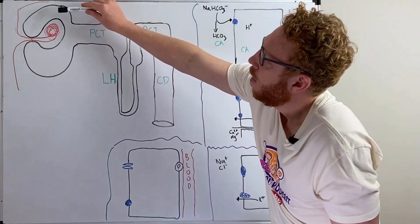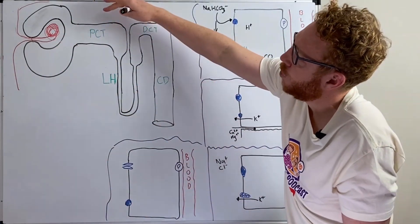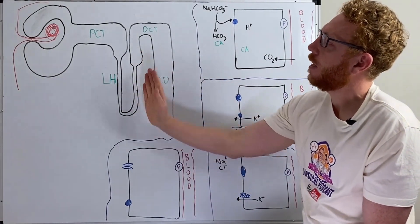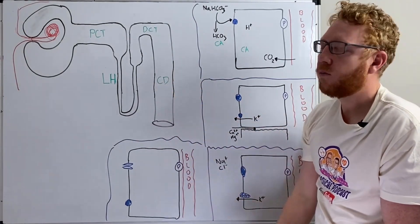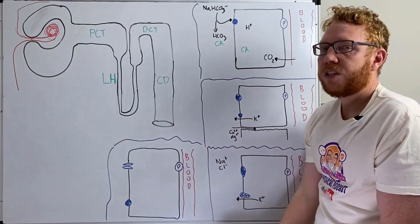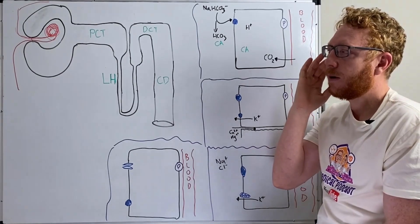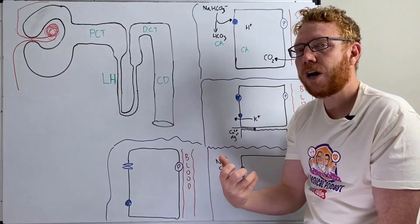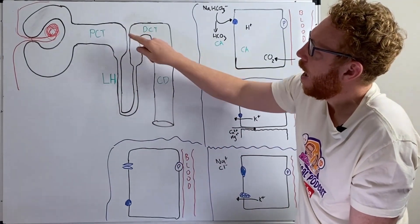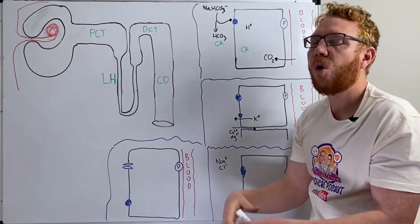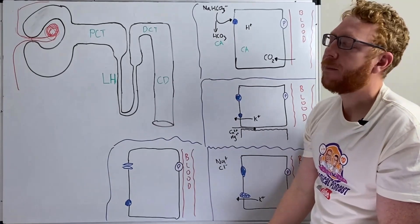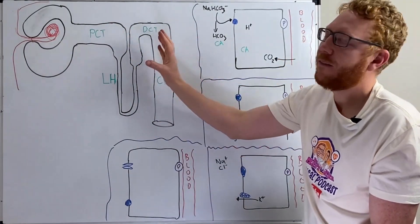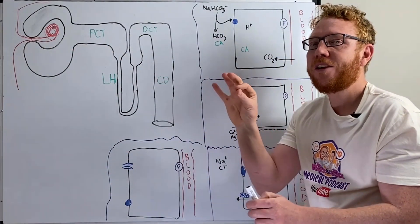The first diuretic acts at the filtrate level. Number two works at the PCT, the proximal convoluted tubule. Number three works at the loop of Henle, particularly the ascending loop. Number four works at the distal convoluted tubule, and number five works at the collecting duct. We can essentially do two main things: we either put more solutes in the filtrate so water follows via osmosis, or in the last four categories we allow less sodium to be reabsorbed back into the blood. If we have more sodium or salt in the filtrate, water goes with it.